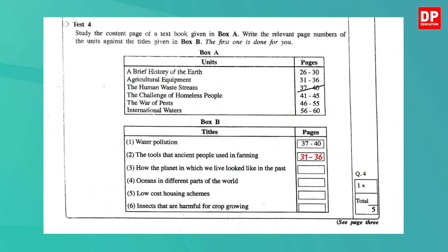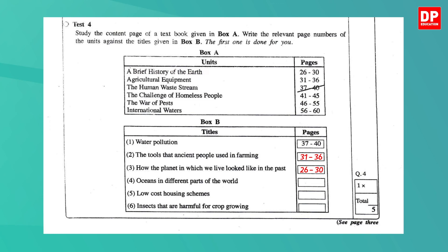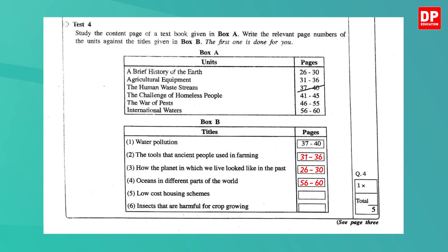The third one: 'How the planet in which we live looked like in the past?' The planet we live in refers to the earth, so it's the first unit — A Brief History of the Earth, pages 26 to 30. Fourth: Oceans in different parts of the world. The matching unit is International Waters, pages 56 to 60. Fifth: Low cost housing schemes. The unit is The Challenge of Homeless People, pages 41 to 45.